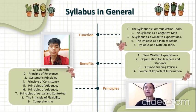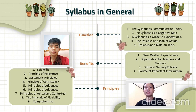The second is the principle of relevance. The principle of relevance provides direction that the scope, depth, level of difficulty, and order of presentation of material in the syllabus must be in accordance with the level of physical, intellectual, social, emotional, and spiritual development of students. This principle of relevance also underlies the selection of materials, strategies, and approach in learning activities, timing, consideration of selecting sources and learning media, and strategies for assessing learning outcomes.